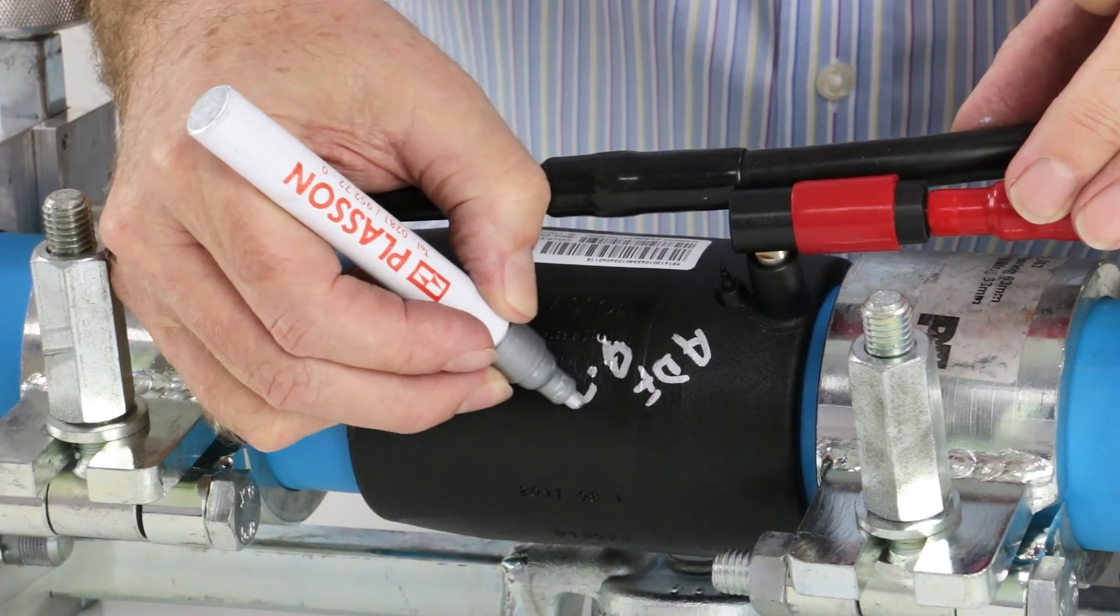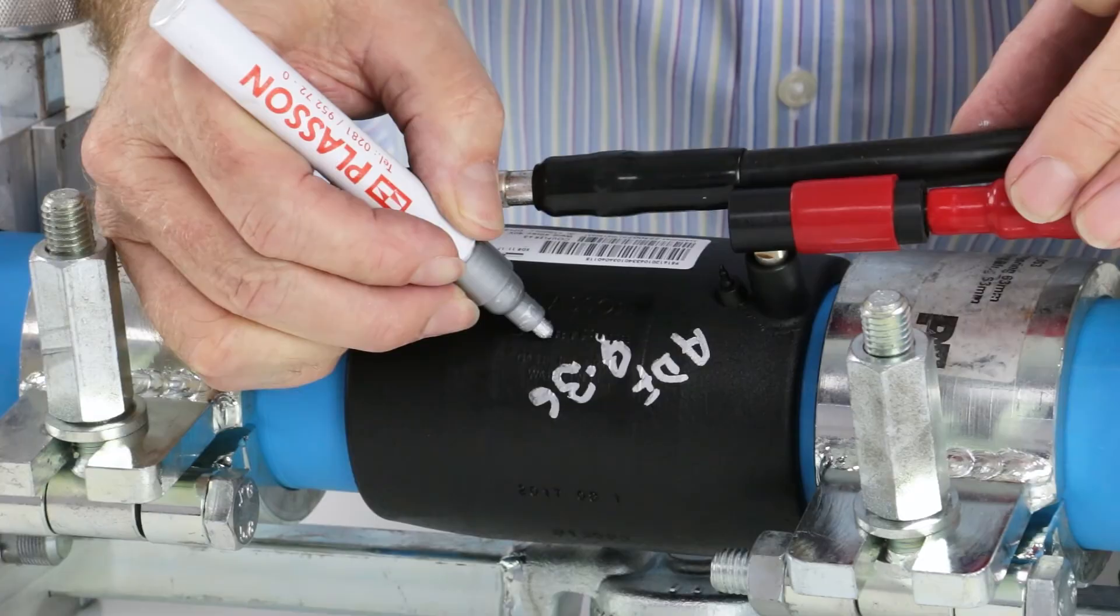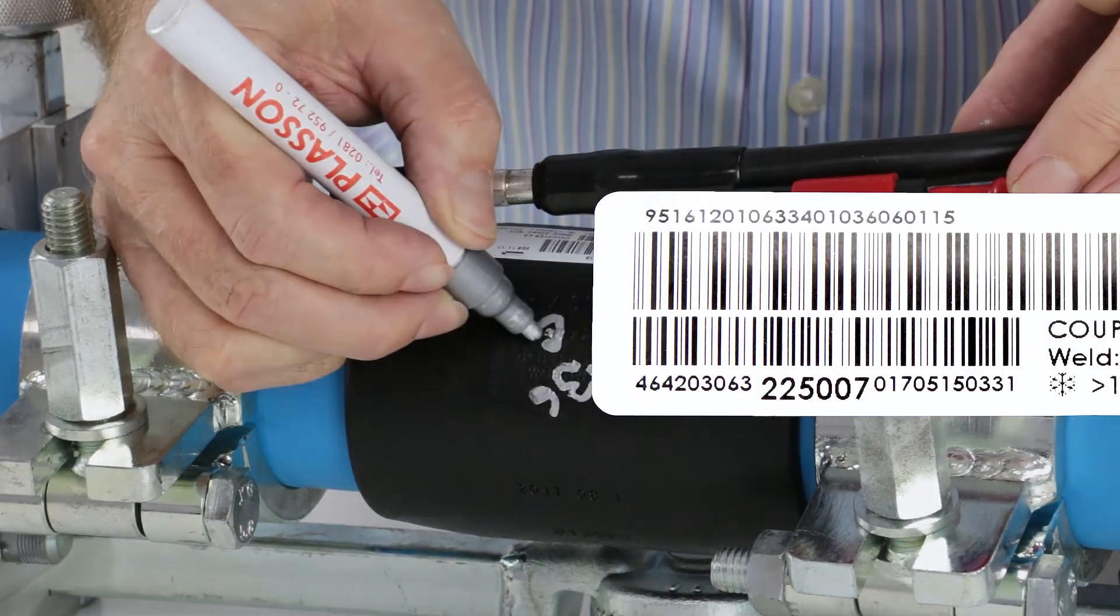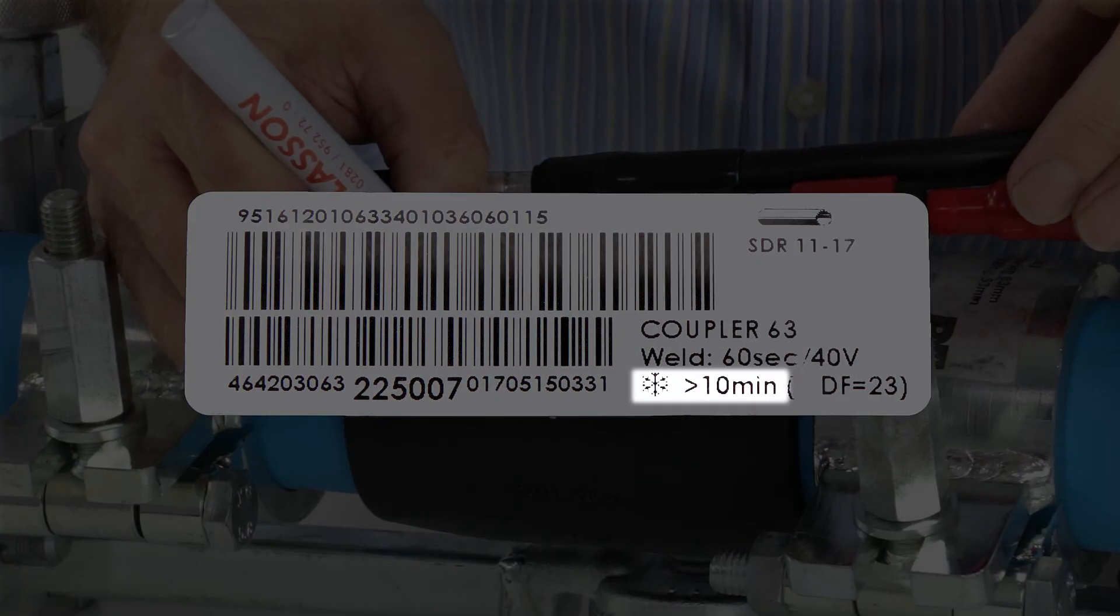Even though the welding process is finished, you still need to leave the clamps and re-rounding devices attached for the entirety of the cooling time, which will also be specified on the barcode.